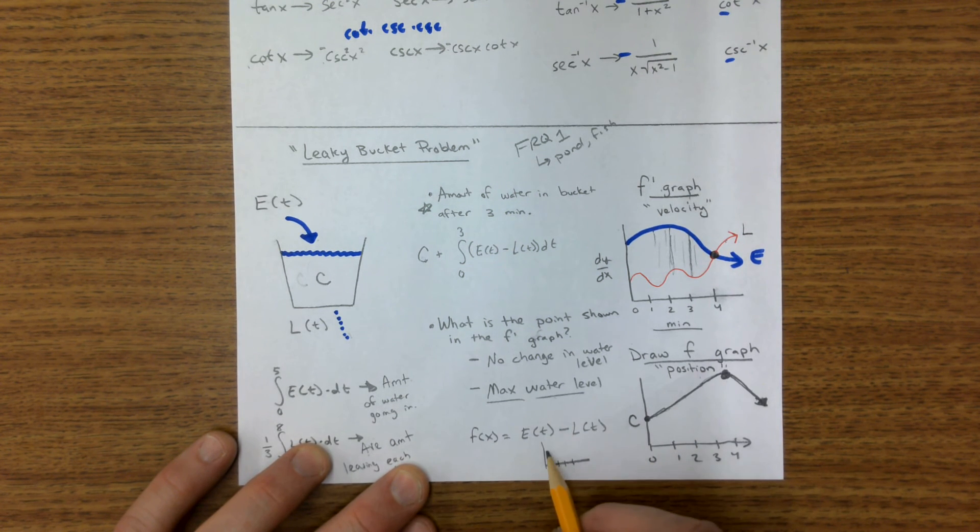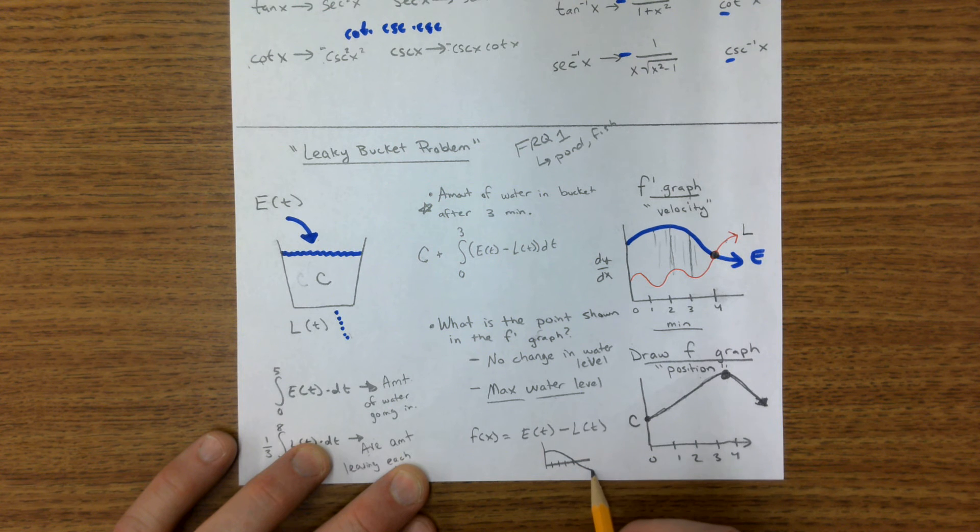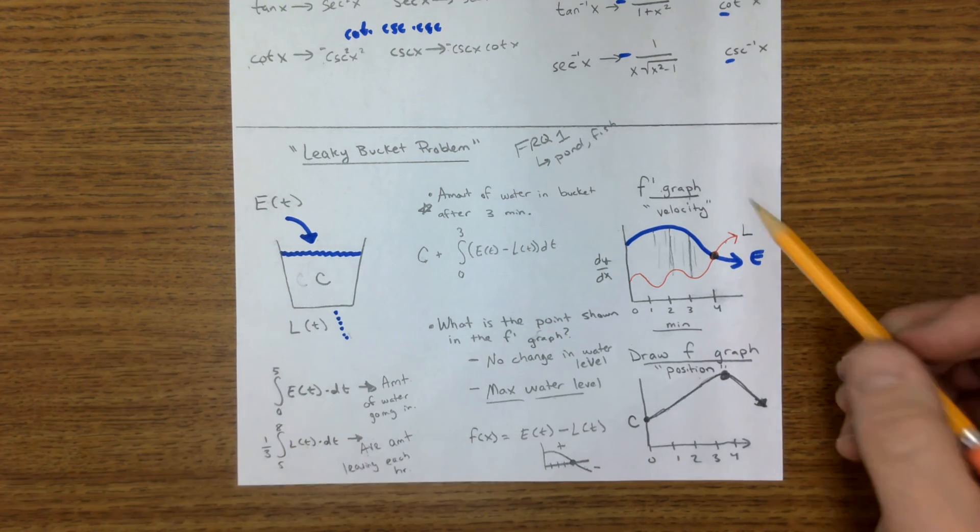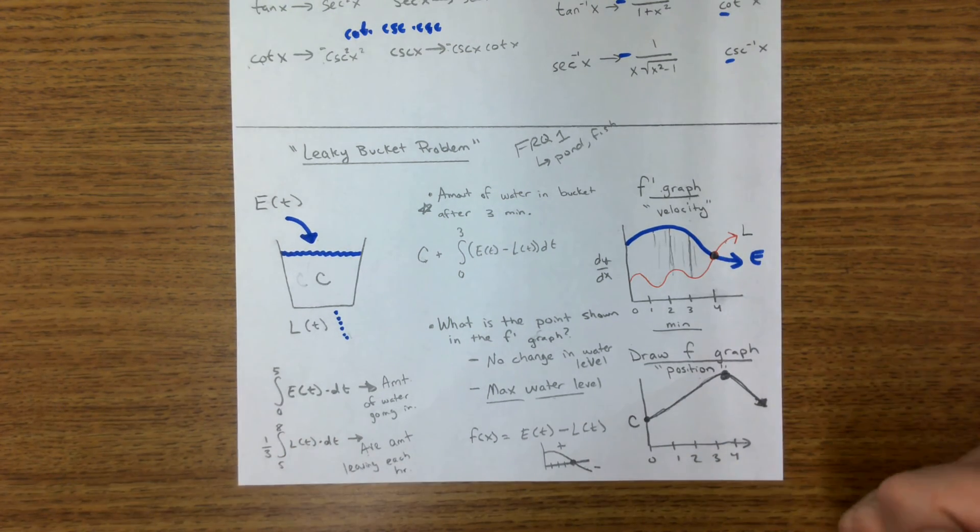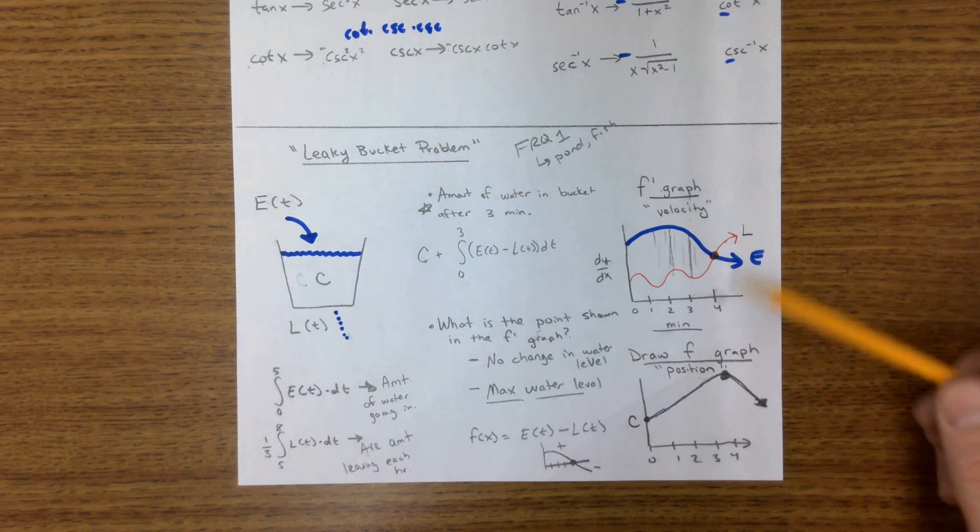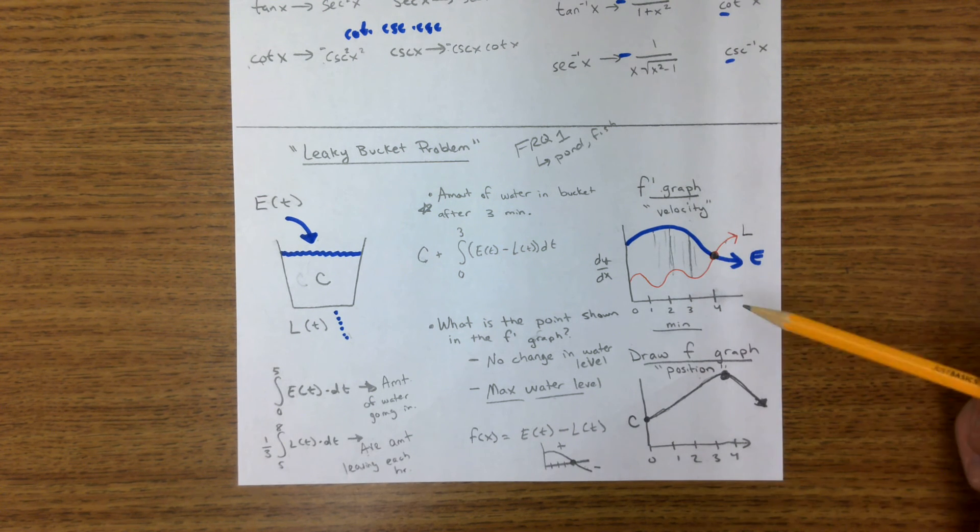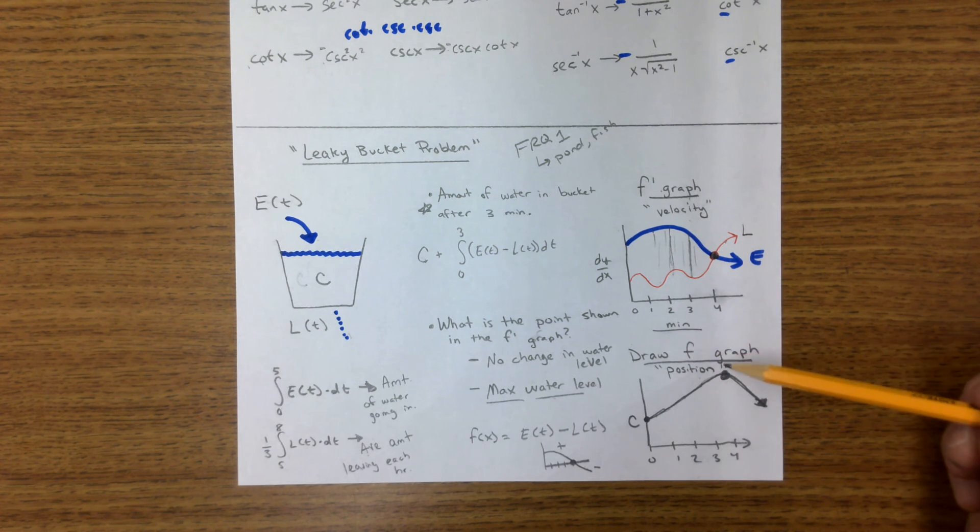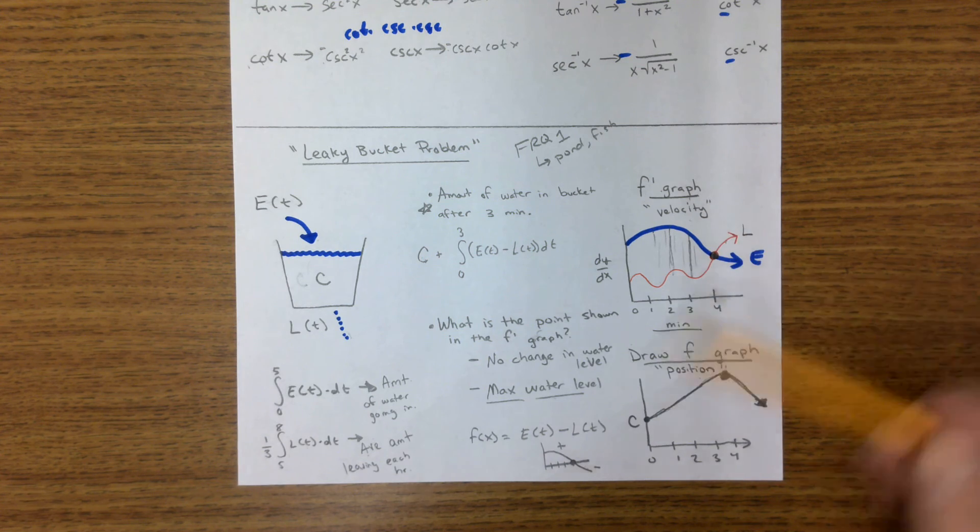At minute four, it was going down. Because we were gaining water, then we were losing water. And right there, nothing happened. So depending on how you graph it, the maximum will appear in different ways. But when you have a position graph, that's the maximum. There's a velocity.